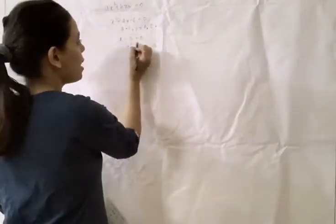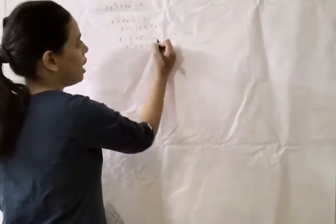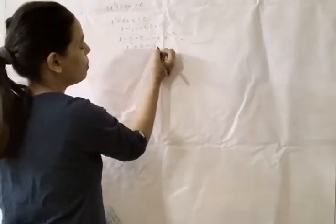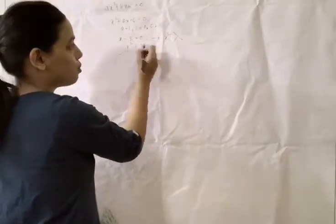Because in X minus 3 equals 0, X squared does not belong. And in X squared plus 3 equals 0, X squared belongs. So this is a quadratic equation.